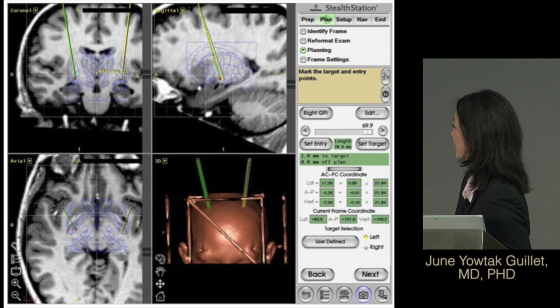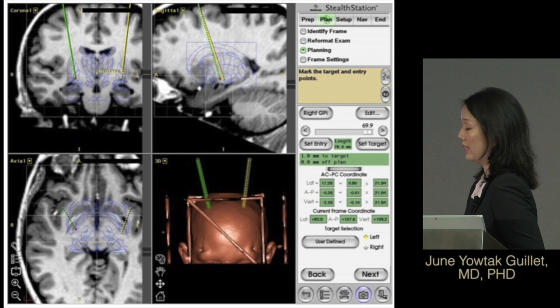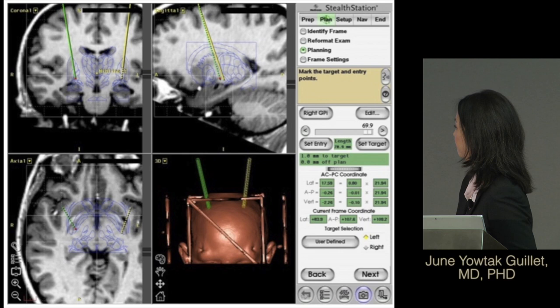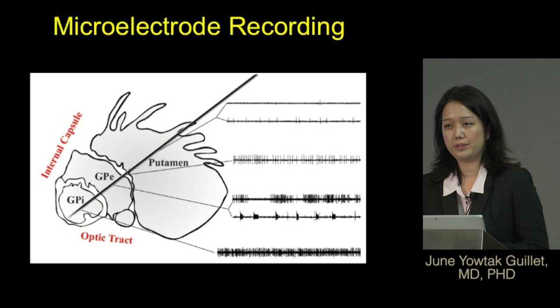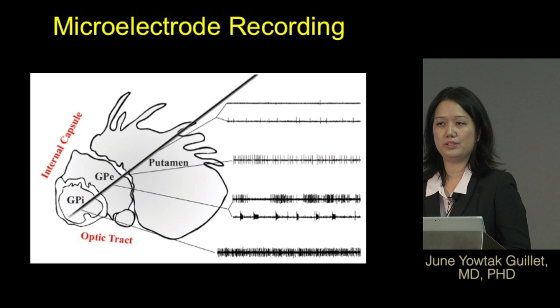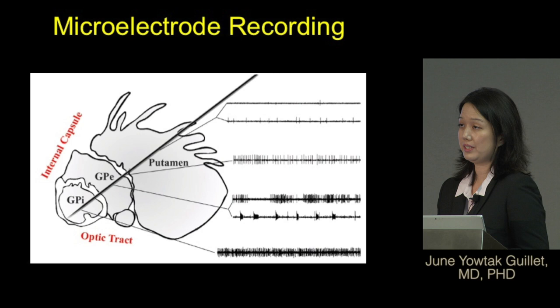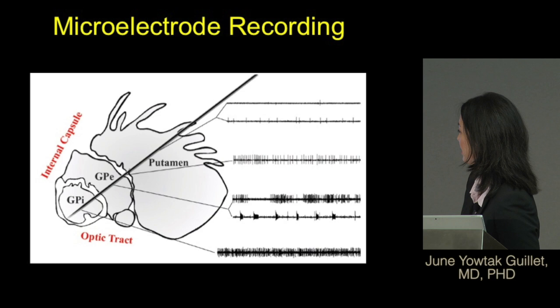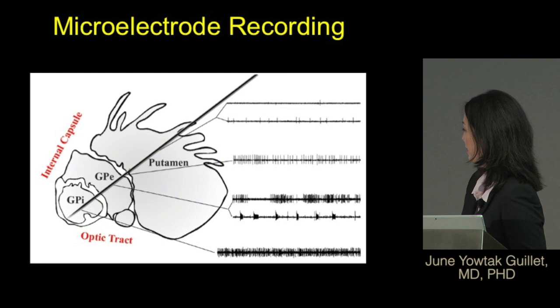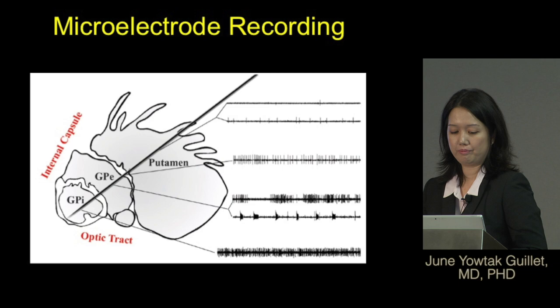This is an example of the planning station we use to obtain the target. You can see different views of the brain, with green and yellow lines representing the different trajectories planned to reach the GPI target. We also perform micro electrode recording — listening to the firing patterns of different neurons as the electrode travels down through tissue. Putaminal neurons have different firing patterns than globus pallidus neurons, and even GPE and GPI differ, helping us confirm exactly where we are in the brain.